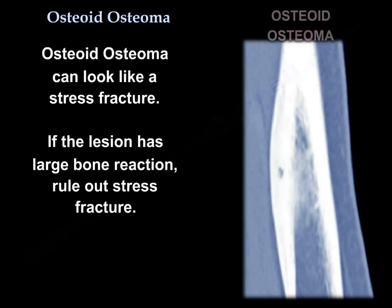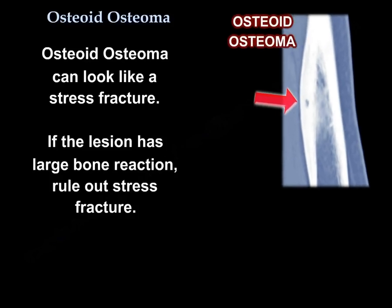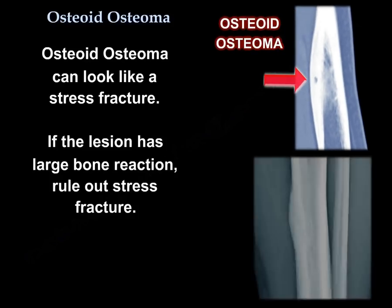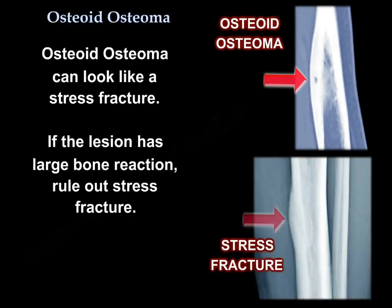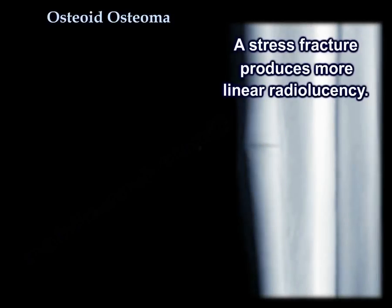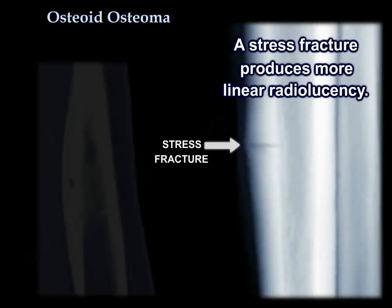Osteoid Osteoma can look like a stress fracture. If the lesion has a large bone reaction, you should rule out a stress fracture. A stress fracture produces more linear radiolucency, which helps distinguish it.